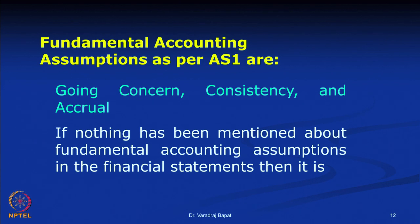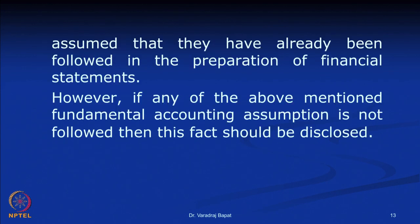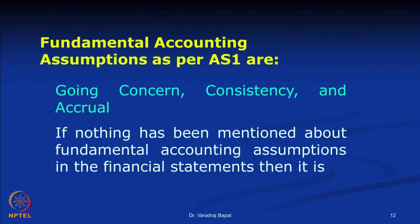As per AS 1 — Accounting Standard 1 — there are three assumptions considered as fundamental accounting assumptions: going concern, consistency, and accrual. It is always assumed that any accounting statements prepared are on the basis of these three assumptions — that is why they are called fundamental accounting assumptions. If any of these assumptions is not true, it is required to be disclosed; but there is no need to disclose them otherwise, as it is assumed they are always followed.